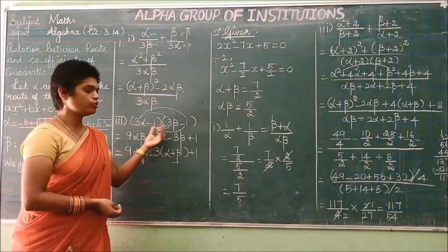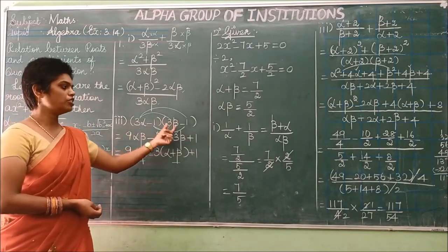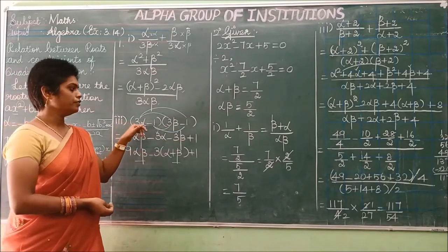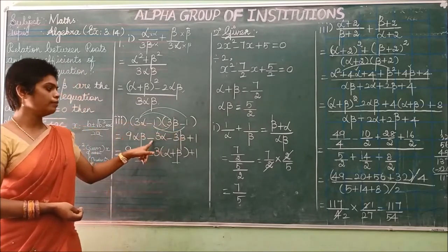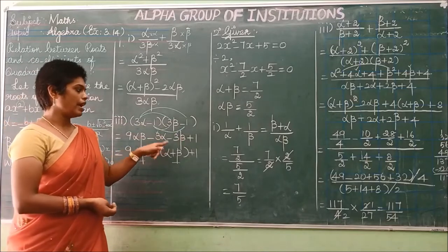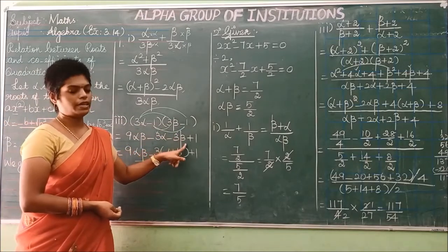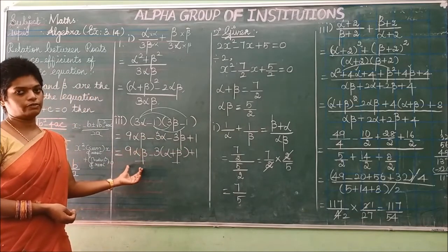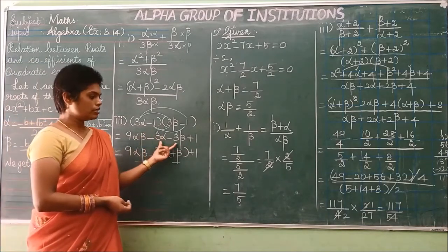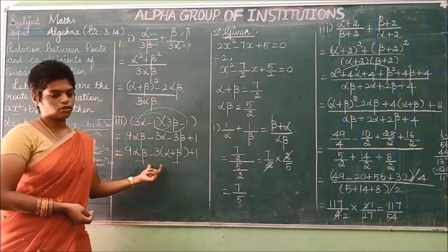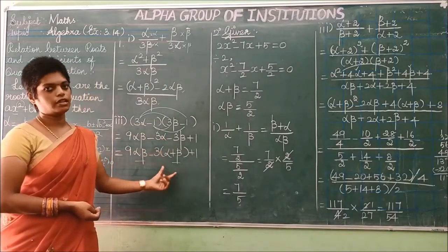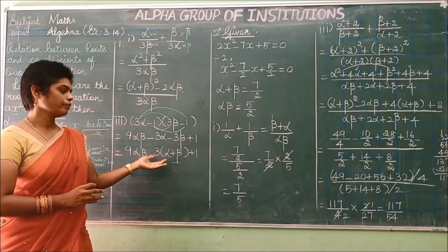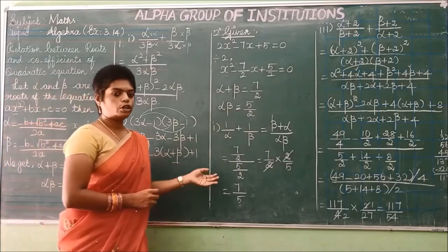Multiply each term to get 9αβ, then first term into second gives −3α, and −3β, plus 1. Take −3 as common from the alpha and beta terms, leaving α+β. So finally, the expression is written in terms of both αβ and α+β. Move on to the next question, exercise 3.14, second problem.